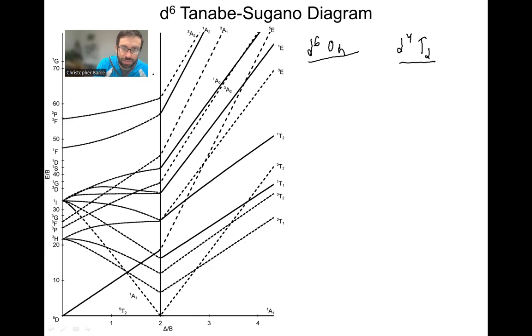This line here is the spin crossover point. So these Tanabe-Sugano diagrams, the D4, the D5, the D6, and the D7, where they have different spin states and spin crossover points, they can be rather complicated.